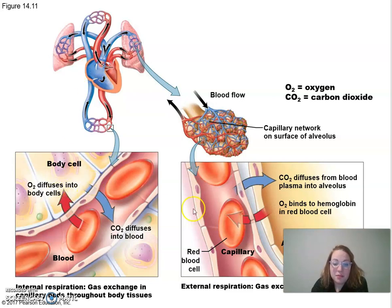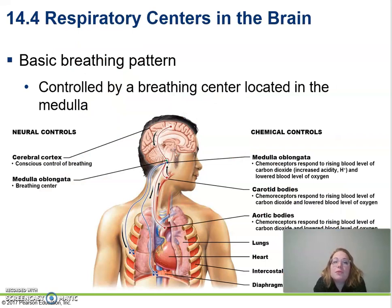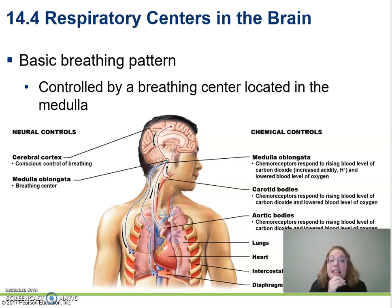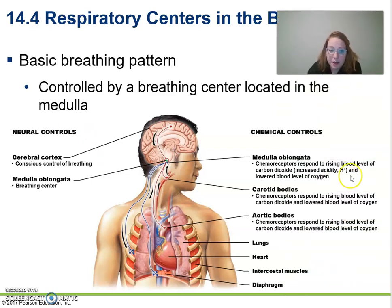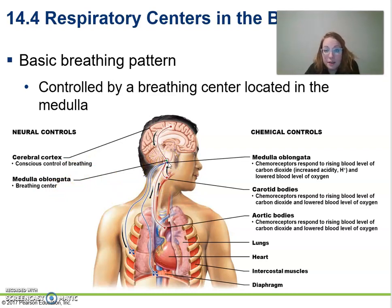You can see how thin those membranes are, allowing rapid diffusion for gas exchange. Now let's look at how we control breathing. We have respiratory centers in the brain — the brainstem handles lower-level function, specifically the medulla oblongata, which contains the breathing center. That's low-level, unconscious, and involuntary.